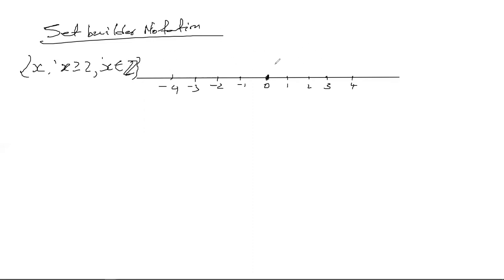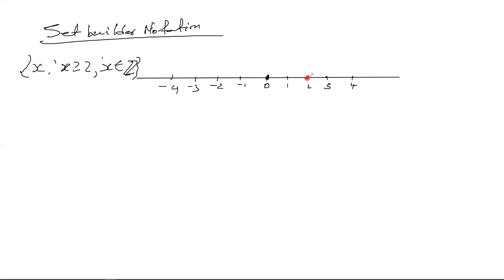When representing this on a number line, you need to be careful. You can't just draw an arrow, because an arrow would imply that even numbers between two and three are included — but those are not integers. This restriction matters. So with x greater than or equal to two and x an integer, you include all integers from two upward: two, three, four, and so on, shown as individual dots.